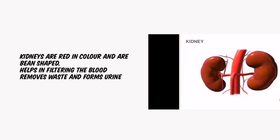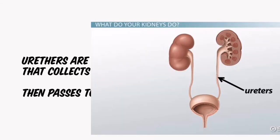Let's look at the organs. The first organ is the kidney. There are two bean-shaped kidneys that are red in color in our body. Kidneys are the filters of our body — they filter our blood. The waste material present in the blood is removed in the form of urine. The formed urine then passes through the ureter tubes.